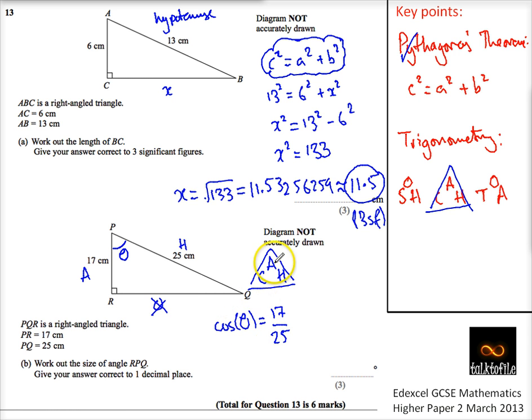So, I wanted to find this, and it's adjacent on top of the hypotenuse. So, therefore, theta is equal to the cos minus 1 of 17 over 25. Now, that gives me, shift cosine 17 over 25, which is 47.15635, which means that theta is roughly equal to one decimal place, 47.2 degrees to one decimal place. And that's it. I'm done.